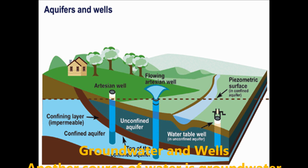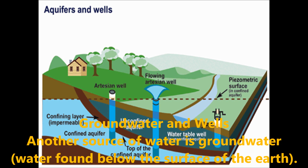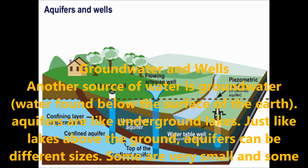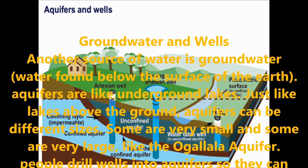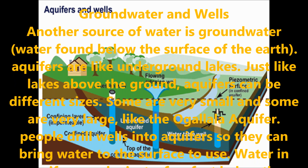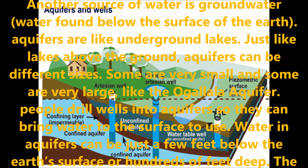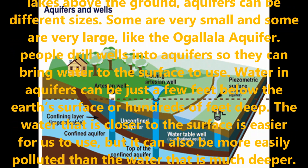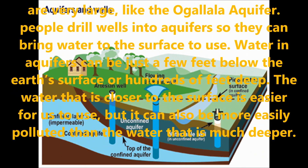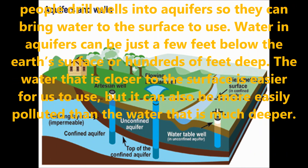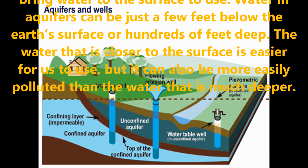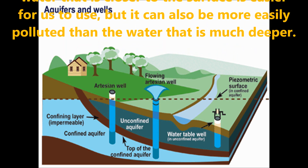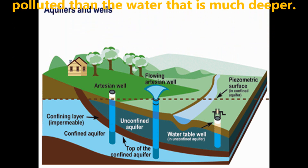Another way of storing water is through groundwater and wells. Aquifers are like groundwater lakes — just like lakes above the ground, aquifers can be different sizes, some very small and some very large. People drill wells into aquifers so they can bring water to the surface for use. Water in aquifers can be just a few feet below the earth's surface or 100 feet deep inside. Water closer to the surface is easier to use but can also be more easily polluted than water that is much deeper.